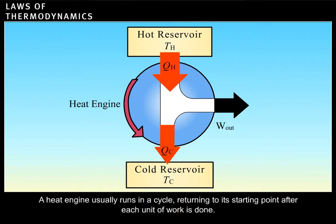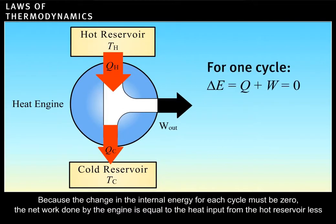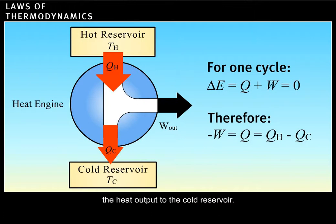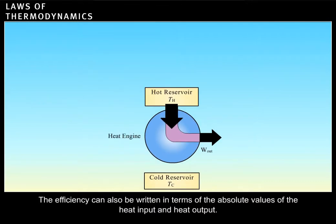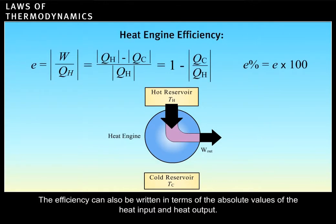A heat engine usually runs in a cycle, returning to its starting point after each unit of work is done. Because the change in the internal energy for each cycle must be zero, the net work done by the engine is equal to the heat input from the hot reservoir less the heat output to the cold reservoir. The efficiency of each engine cycle is defined as the absolute value of the net amount of work done by the engine divided by the heat input. The efficiency can also be written in terms of the absolute values of the heat input and heat output.